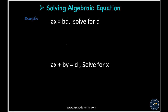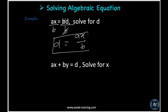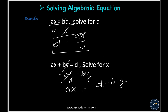Here is another type of problem where everything is in variables with no numbers. For ax equal to bd, solve for d: divide both sides by b — the b's cancel — so d equals ax over b. For ax plus by equal to d, solve for x: subtract by from both sides, then divide both sides by a. The answer is x equals d minus by over a.